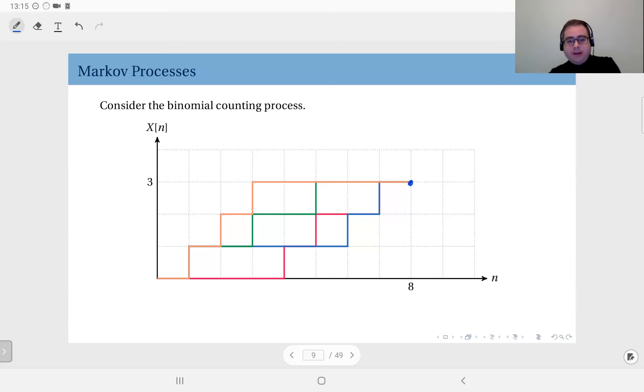The path it took to that point has no effect on where it will go next. With probability p at epoch number nine it will go to four, or with probability one minus p, the fail probability, it will stay at three. That's it, simple as that.